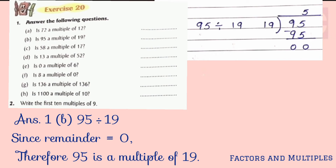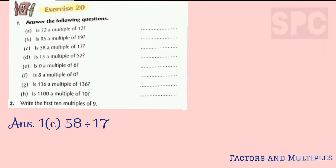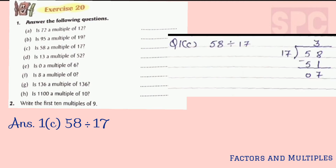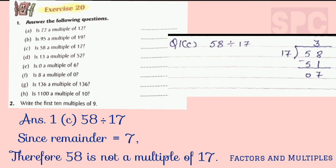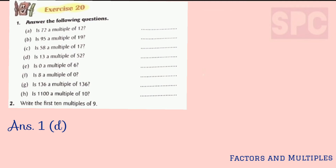In part c, we divide 58 by 17 and see what we get in the remainder. When you divide 58 by 17, you get 7 in the remainder — 17 threes are 51, and 58 minus 51 is 7. Since we have not got 0 in the remainder, it means 58 is not a multiple of 17, so we write no.